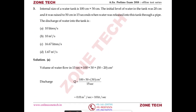Question number three: the internal size of a tank is 100 cm × 50 cm. The initial level of water in the tank was 20 cm and it was raised to 50 cm in 15 seconds when water was released into this tank through a pipe. Find the discharge of water into the tank.